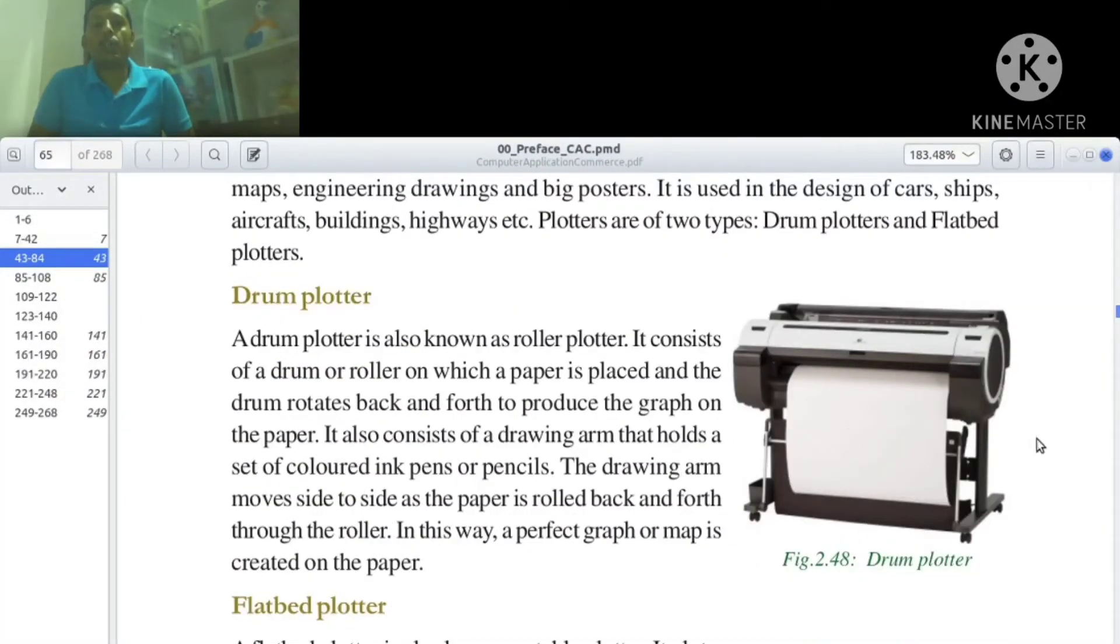Drum plotter is also known as roller plotter. It consists of a drum or roller on which a paper is placed, and the drum rotates back and forth to produce the graph on the paper.